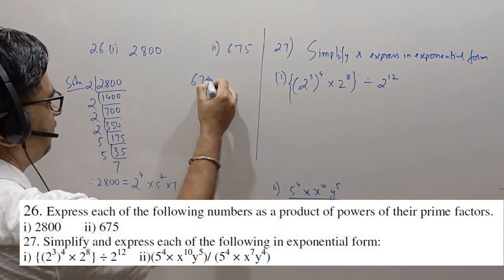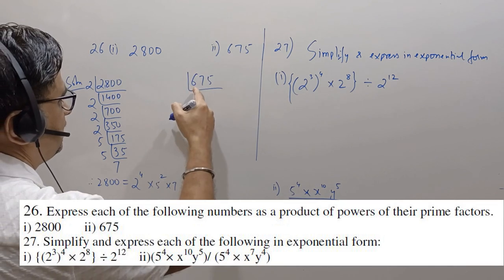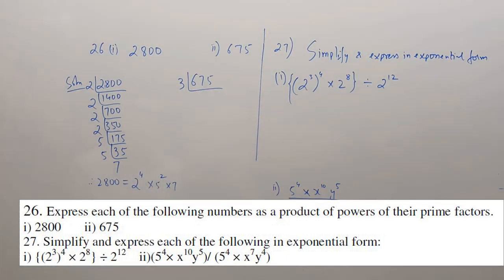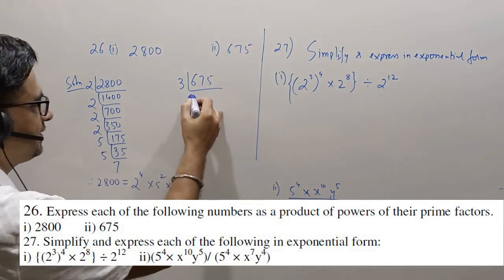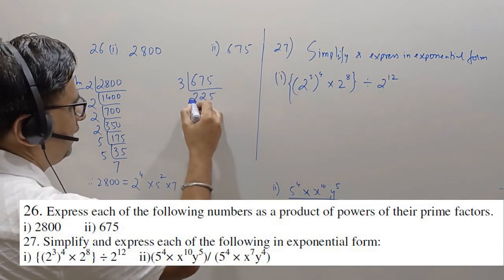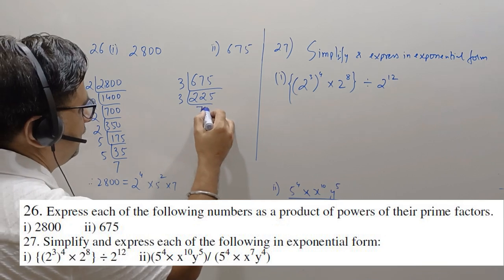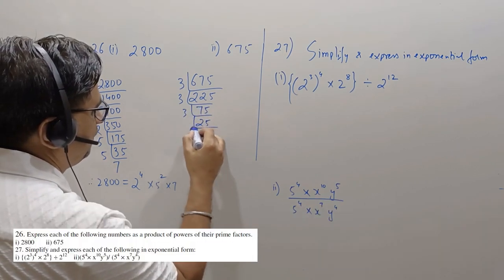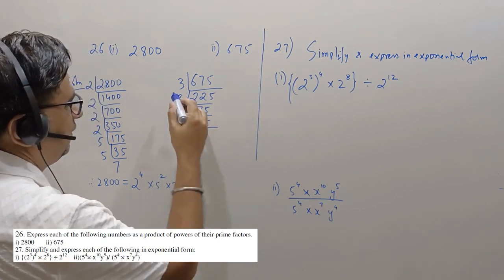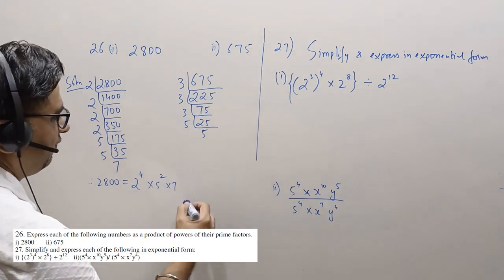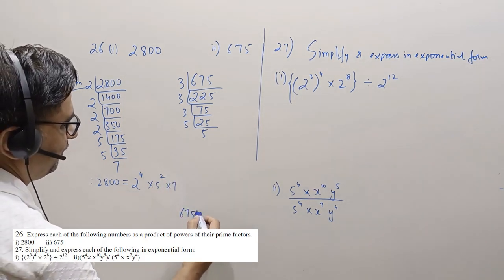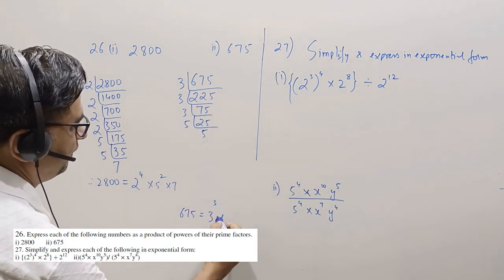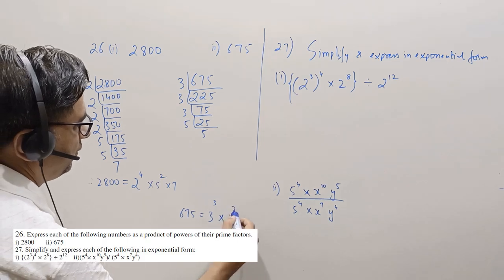Now let's try 675. It's divisible by 3 because the sum of the digits is divisible by 3. This gives 225. This is again divisible by 3, giving 75. Now it's not divisible by 3, but it's divisible by 5. So 675 can be written as 3 to the power 3 into 5 squared. That's the answer.